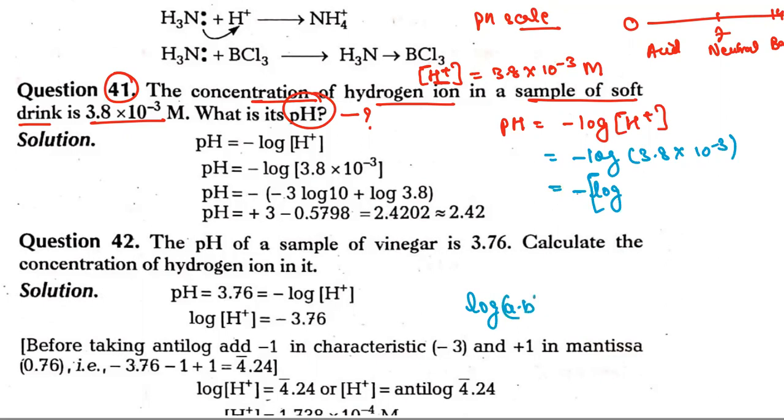If you take the log of 3.8 × 10^-3, we have two forms to work with. Now we need to calculate the value of log 3.8.